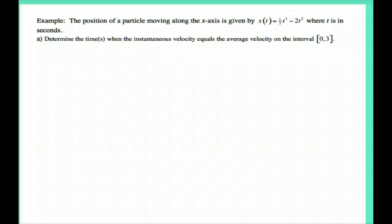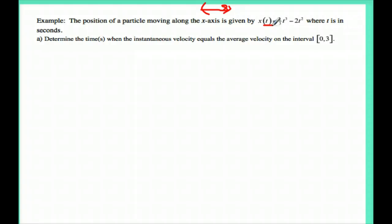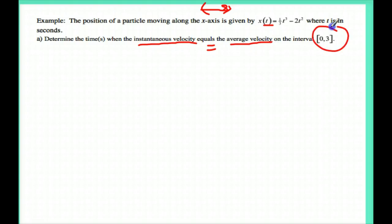Let's take a look at this problem. As you can see, it has the position of a particle moving along an x-axis, so I know I'm going left and right, and I have a position function x of t. Determine the times with an instantaneous velocity — that's important — equals the average velocity during this time interval.